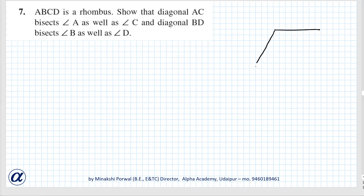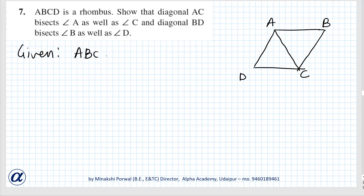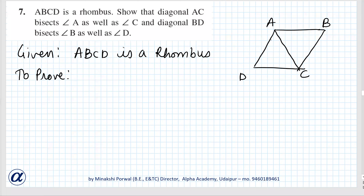ABCD is a rhombus — this is given. To prove: we name the angles to make it easier. Angle 1, angle 2, angle 3, angle 4. We have to prove angle 1 equals angle 2, and angle 3 equals angle 4.